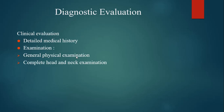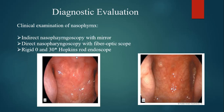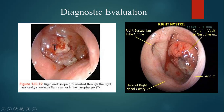Among the clinical evaluation, medical history and examination are very important. A complete head and neck examination should be done. Clinical examination of the nasopharynx is usually done by endoscope with the help of a 0-degree or 30-degree Hopkins rod endoscope. As you can see, this is the endoscopic view of the nasopharynx and you can easily see a fleshy tumor inside the nasopharynx.